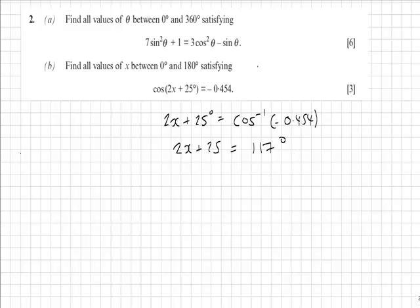But also using the symmetry of the curve, if we imagine a cosine wave, 117 degrees would be here. So we need to go back 117 degrees from 360 to get the corresponding point, which would in fact be 243 degrees.